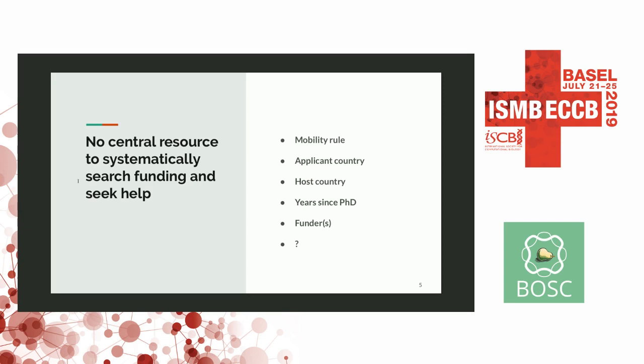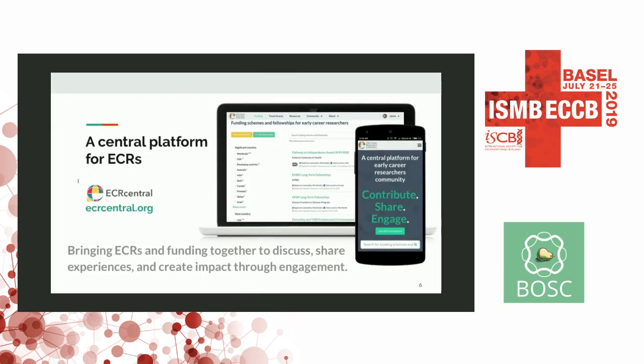For example, based on mobility rules — say you're coming from Germany and want to go to the US — you'd go to such a resource which lists all the fundings filtered by that criterion. Under the umbrella of the eLife Ambassador Program, we created such a resource, which we call ECR Central, available online for everyone at ECRCenter.org.